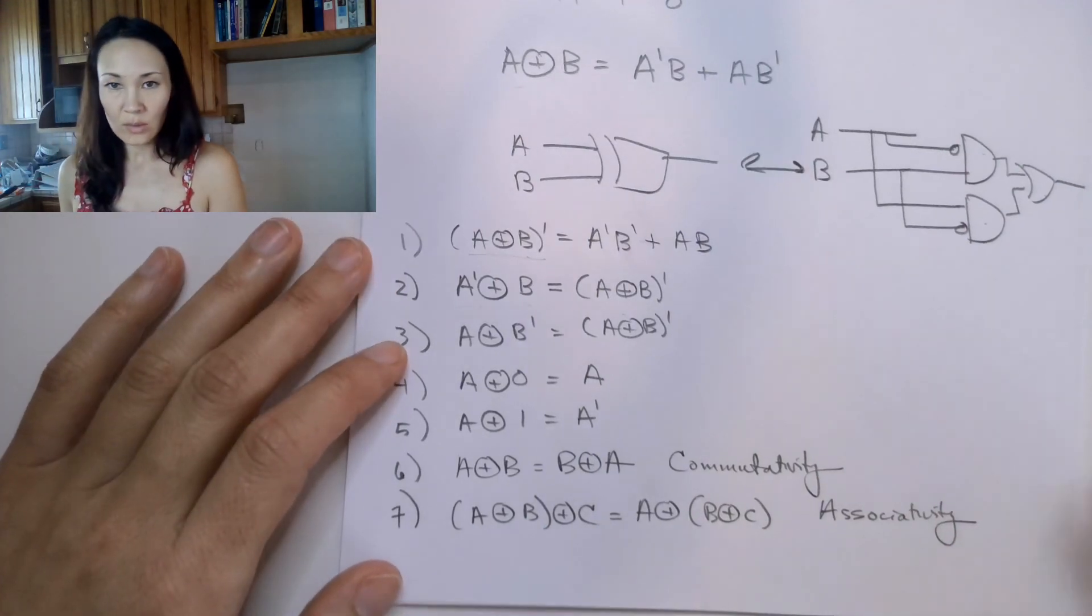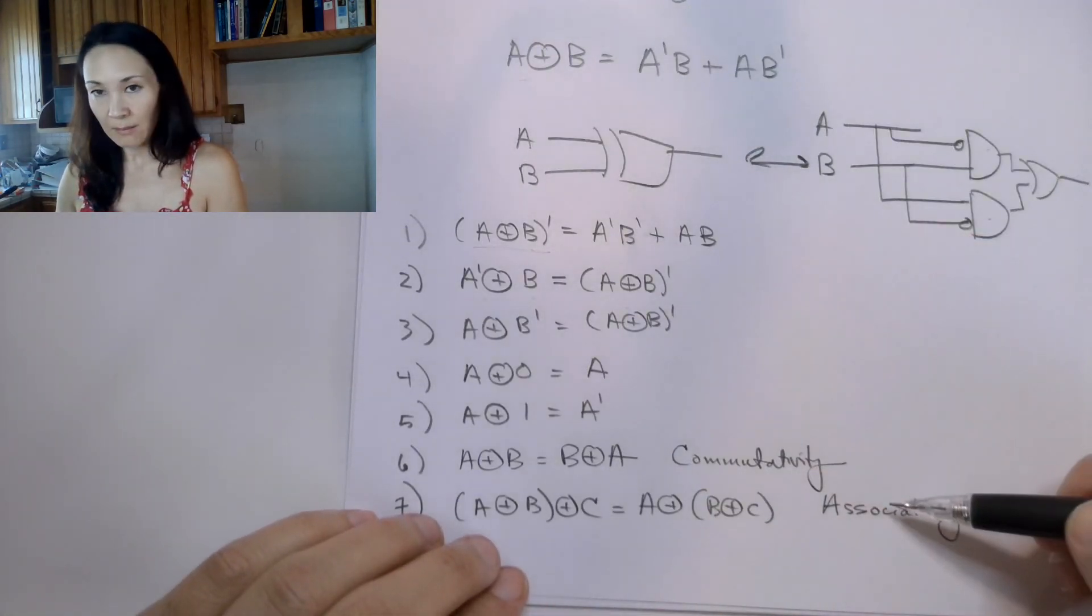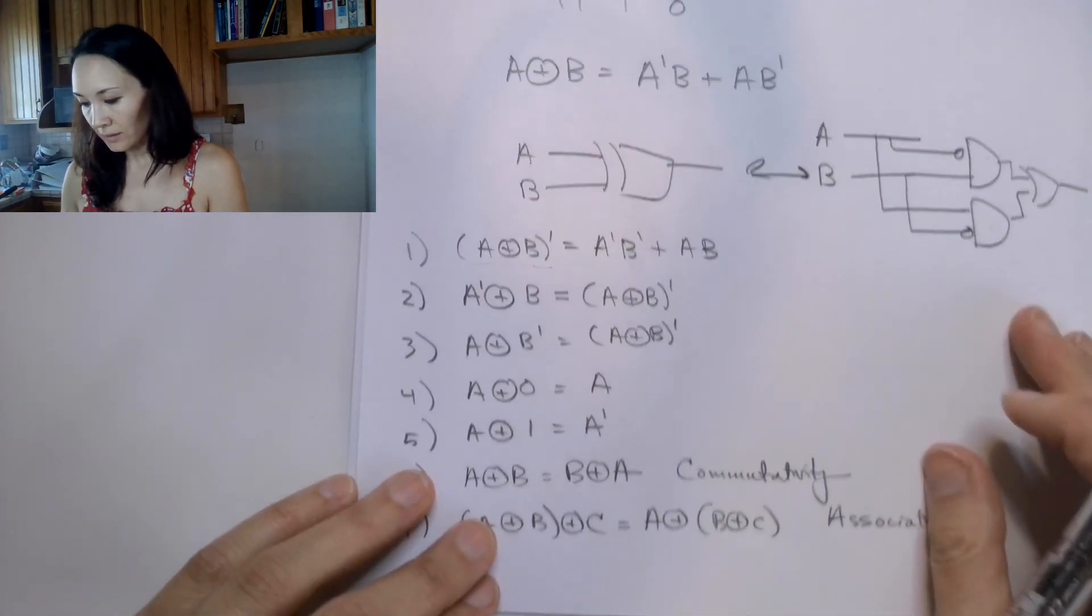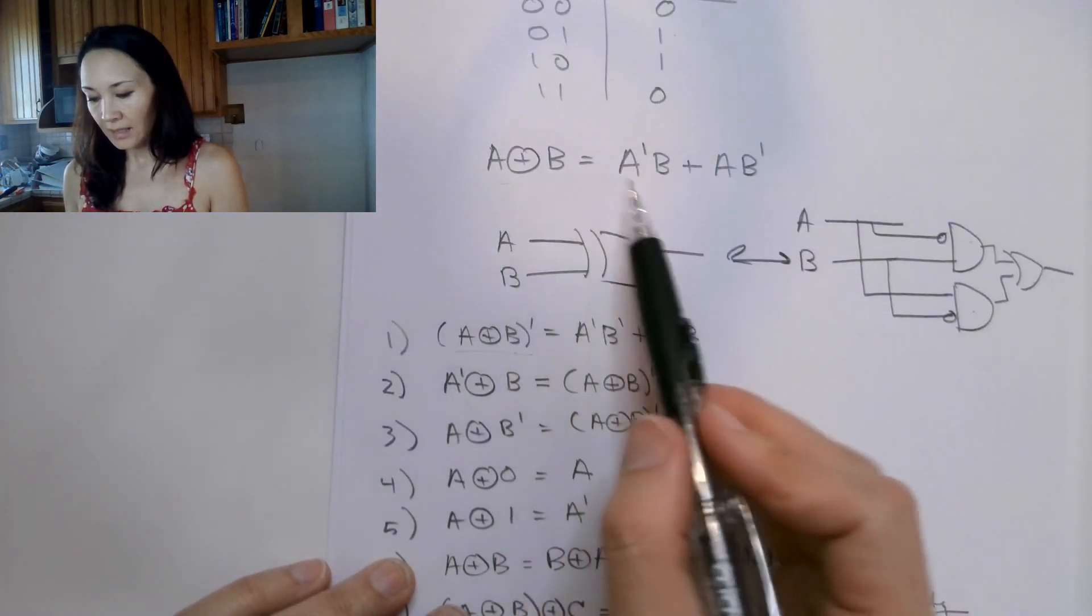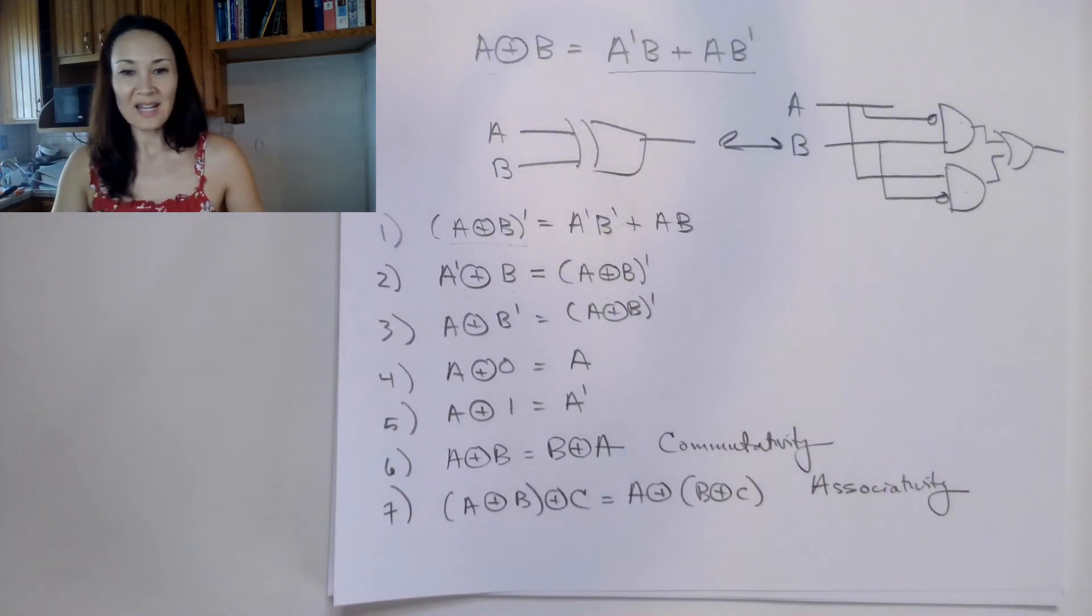And again, in order to prove all these properties, we're going to use basically these same properties that we have for ands and ors by rewriting our XOR function in terms of ands and ors, basically. So that'll be in the next video.